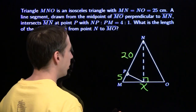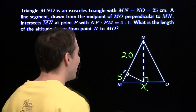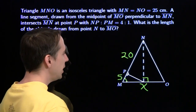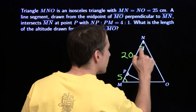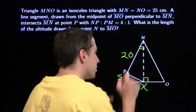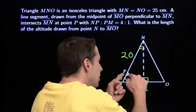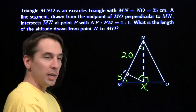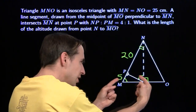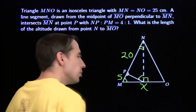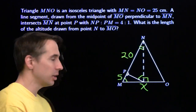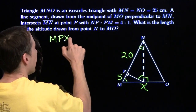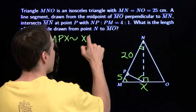There are a bunch of similar triangles here. We'll focus on angle M. This angle down here is 90 minus angle M from the right triangle. Now look at this other triangle — this angle over here also has to be 90 minus that angle. So these two angles are equal, and we've got two right angles in there — angle-angle similarity. These two triangles are similar: MPX is similar to XPN.